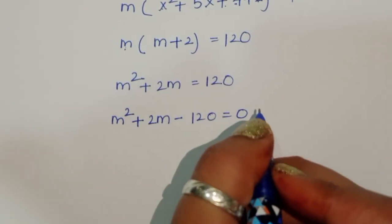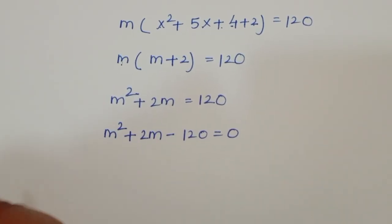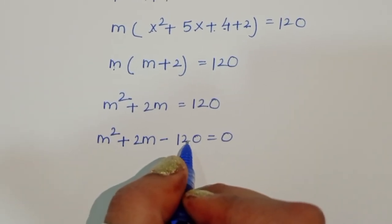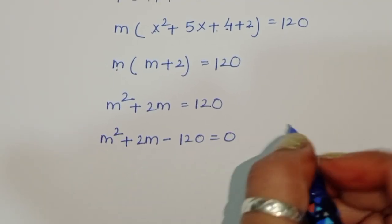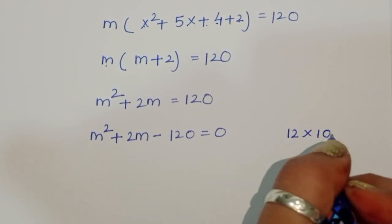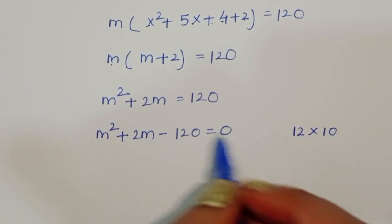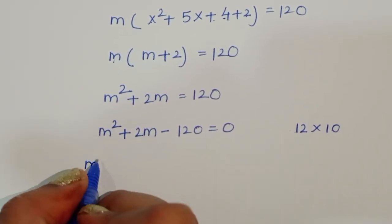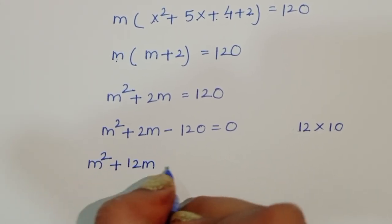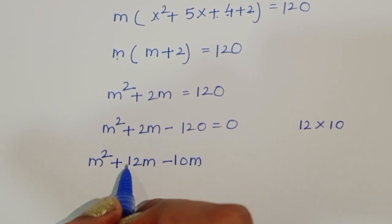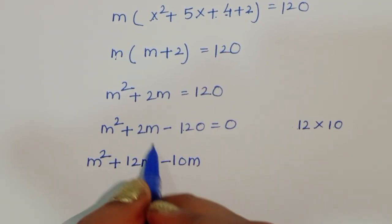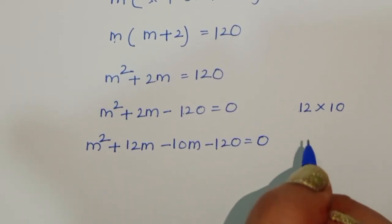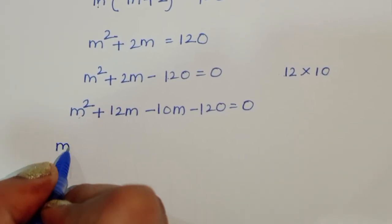To factor m² + 2m - 120 = 0, we need two numbers whose product is 120 and difference is 2. That is 12 and 10, since 12 × 10 = 120 and 12 - 10 = 2.